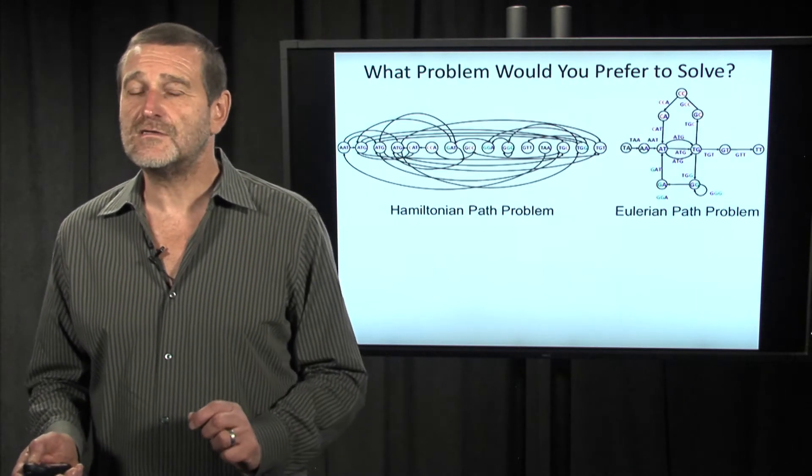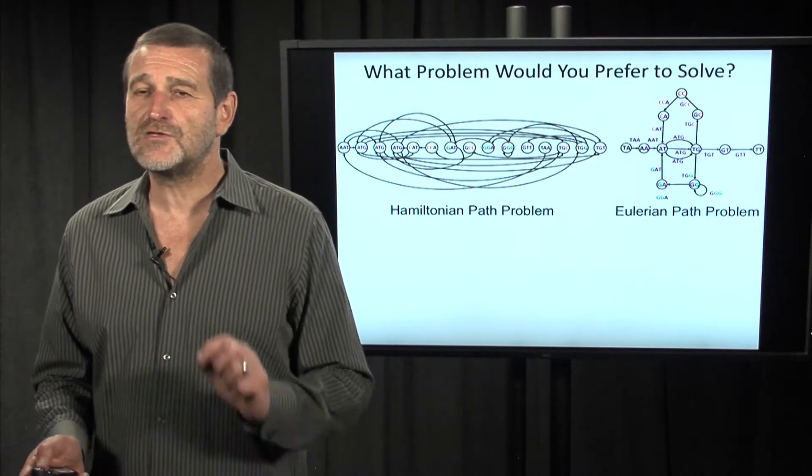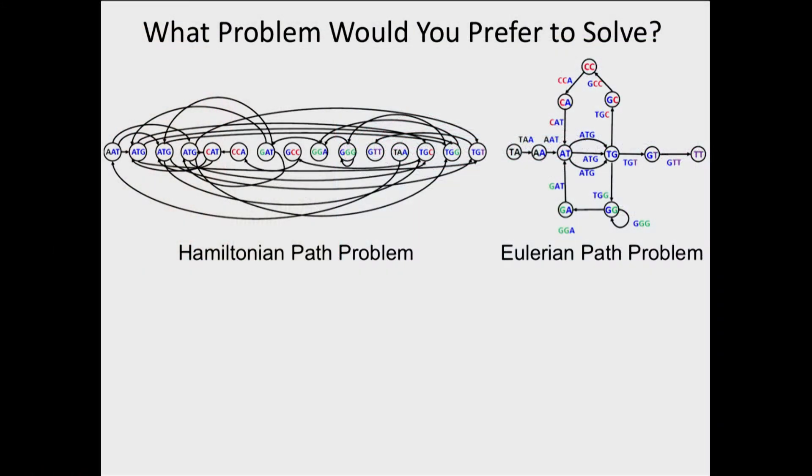Let me ask you a question. If you were given the possibility to choose between the Hamiltonian path problem and the Eulerian path problem as presented at this slide, what choice would you make? Sean?